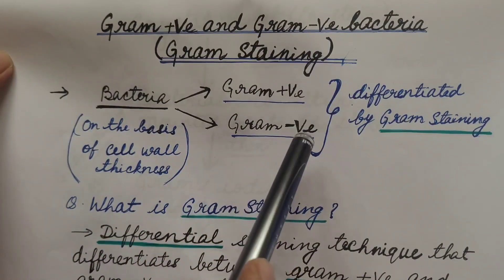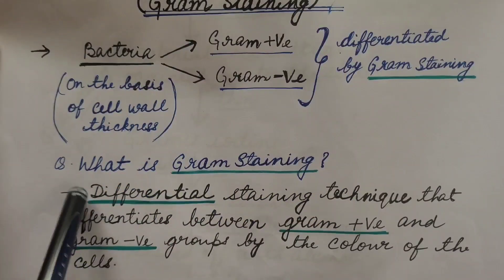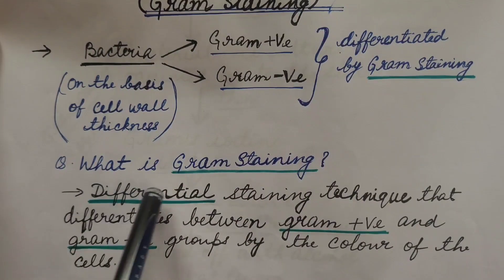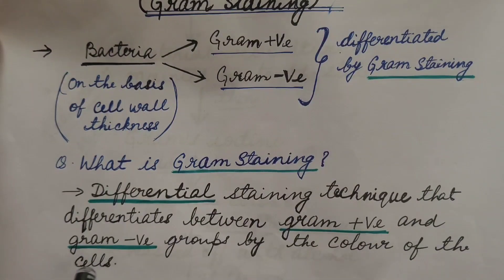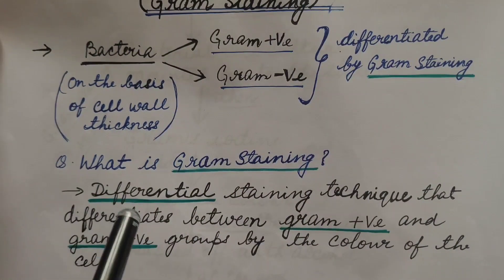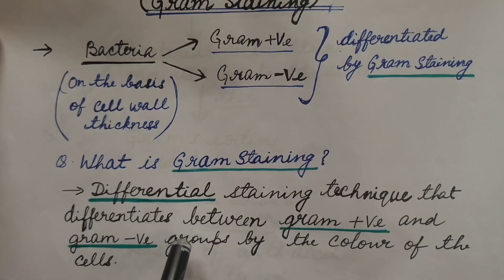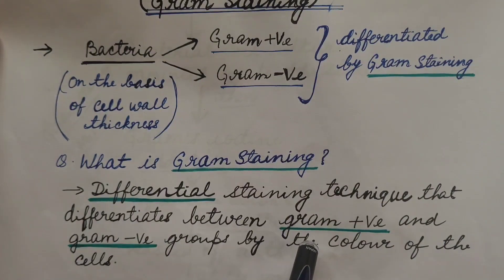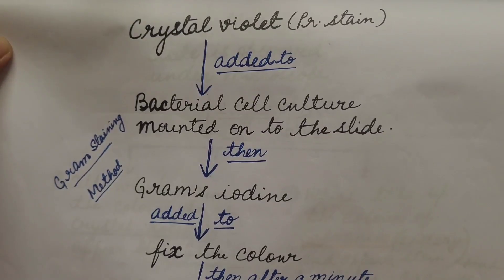Gram positive and gram negative bacteria are differentiated by the gram staining method. Gram staining is a differential staining technique that differentiates between gram positive and gram negative groups by the color of the cells. By this method we can differentiate between gram positive and gram negative bacteria depending on which color the bacterial cells appear when observed under the microscope.